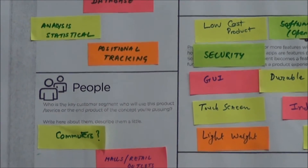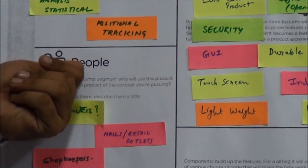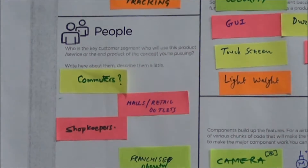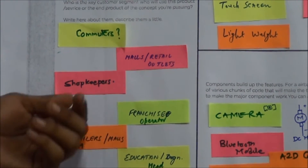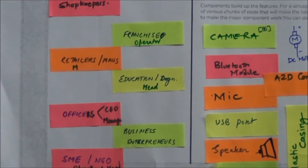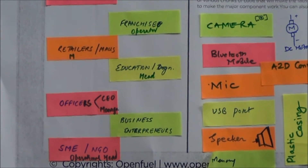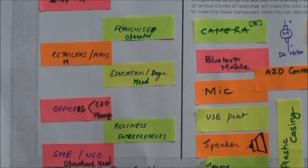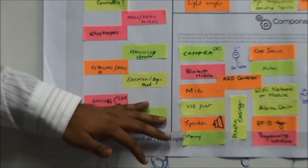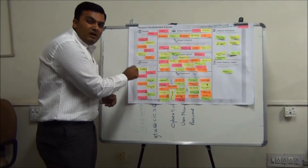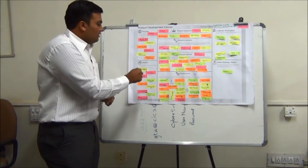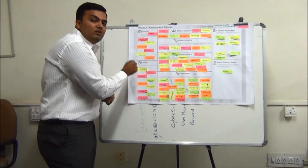Who can use it — who are the key customers in the people category? There are various segmentations: shopkeepers, mall and retail outlets, users, franchisee operators, educational institutions, and officers in different offices and departments. This is a reference part. We need to focus on either each department-level officer or each commuter, and then go for the product-level design.